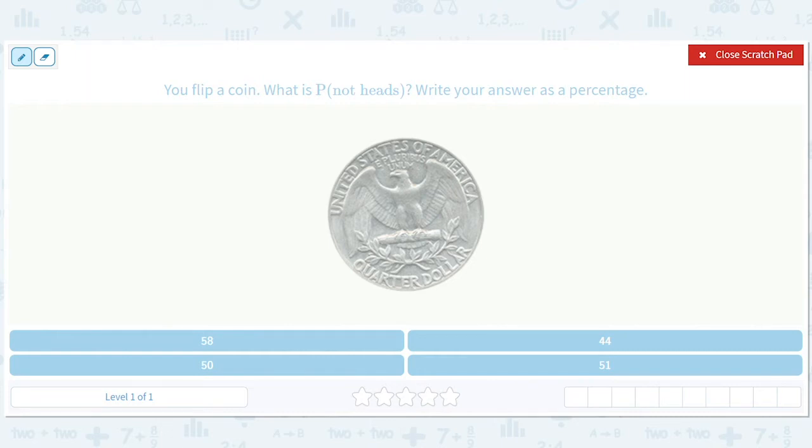So you flip a coin. What is the probability of not getting heads? Write your answer as a percentage. Okay, it's 50-50, right? So it's 50% that you get heads. It's 50% that you don't get heads. So this one is pretty clear. It's not over complicated.